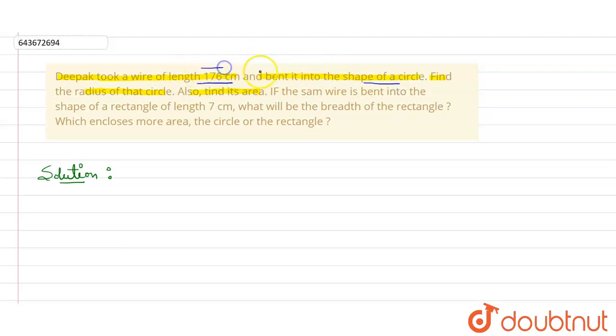It is given that wire is of length 176 centimeter and he bent this into shape of circle. This 176 centimeter wire is now in the shape of circle, so circumference of whole circle will be 176 centimeter. According to question, circumference of circle equals 176 centimeter.